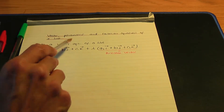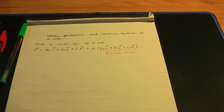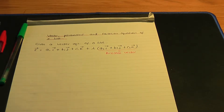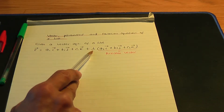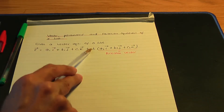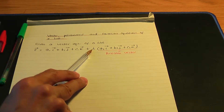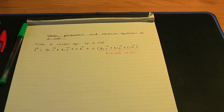Let me show you how to get, firstly, the parametric equations, and then from the parametric equations I'll show you how to get the Cartesian equations. Parametric equations are equations for x, y, z in terms of lambda. And Cartesian is one equation only involving x, y, and z — in other words, we'll be getting rid of lambda from the parametric equations to get one equation in terms of x, y, and z, known as the Cartesian equation.